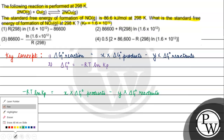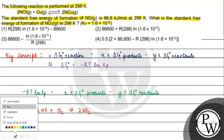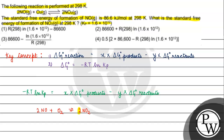Our reaction is 2NO + O₂ → 2NO₂. The stoichiometric coefficient of the product NO₂ is 2. Writing it out: R is 8.314 J per Kelvin per mol, into temperature which is 298 Kelvin, times ln of Kp = 1.6 × 10 raised to the power 12.